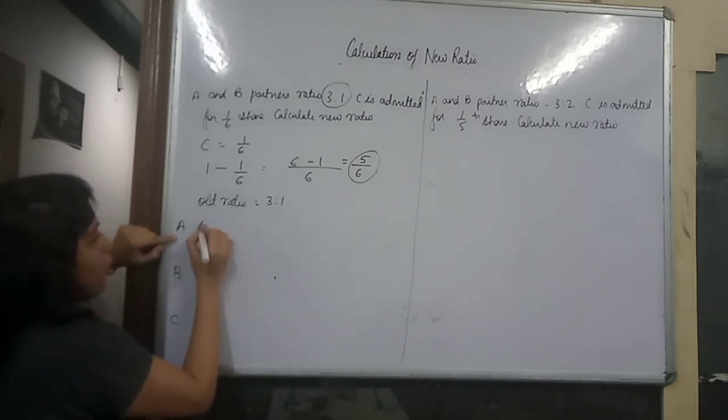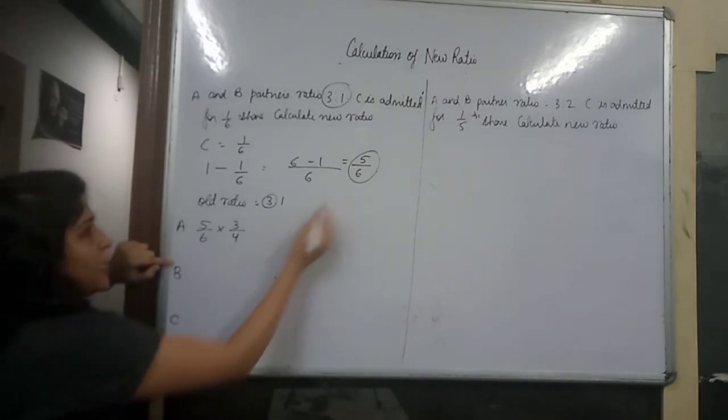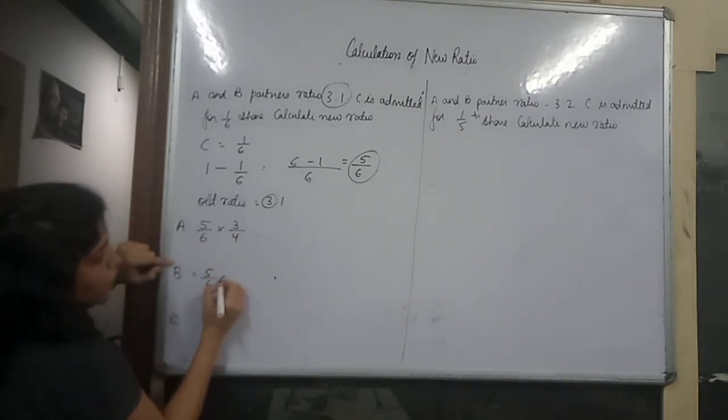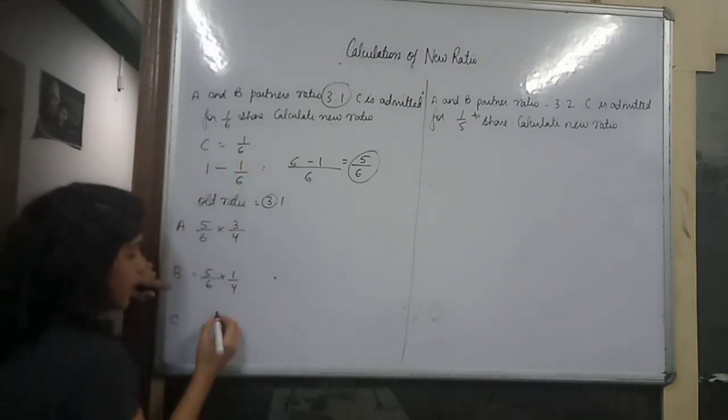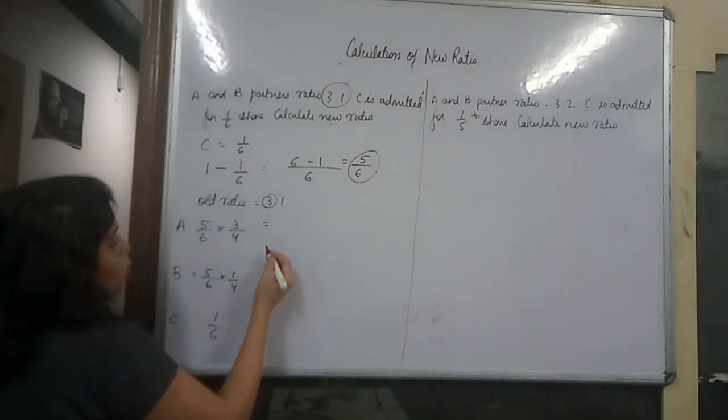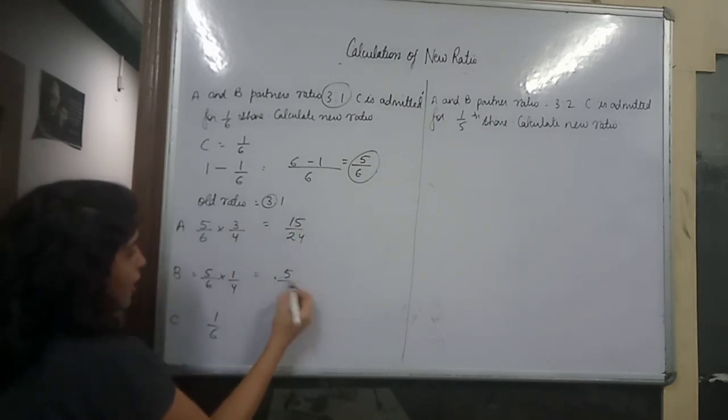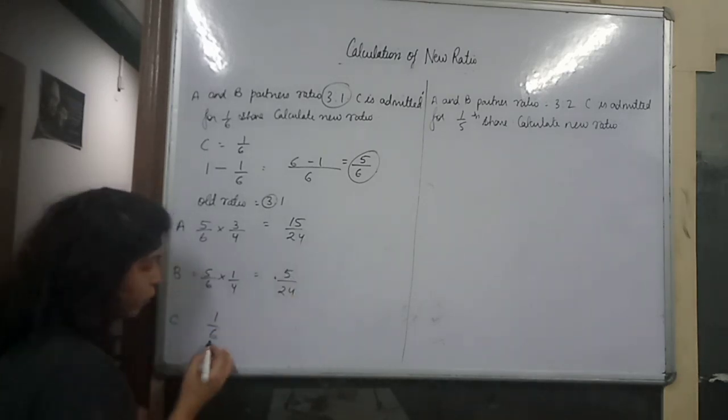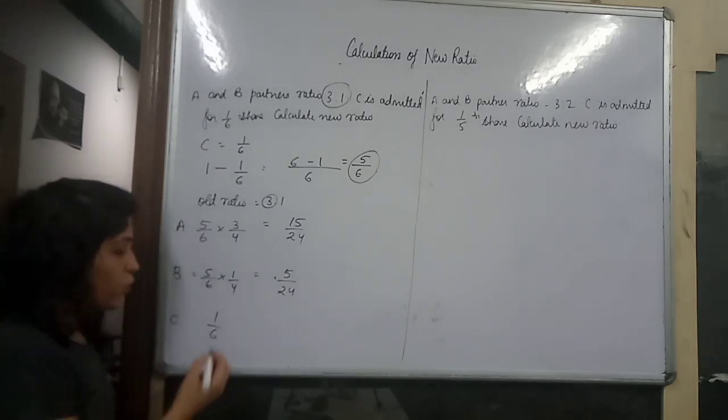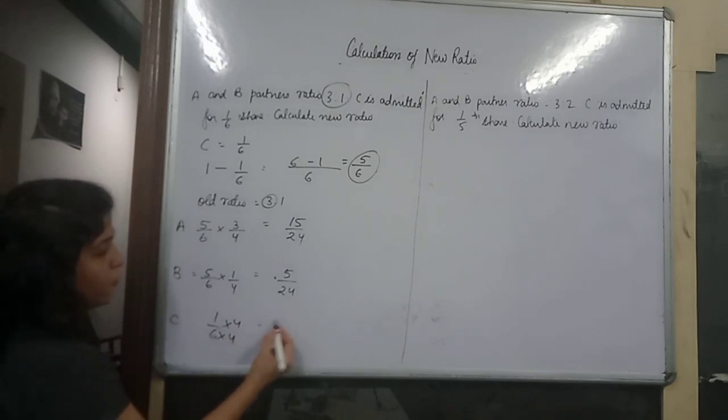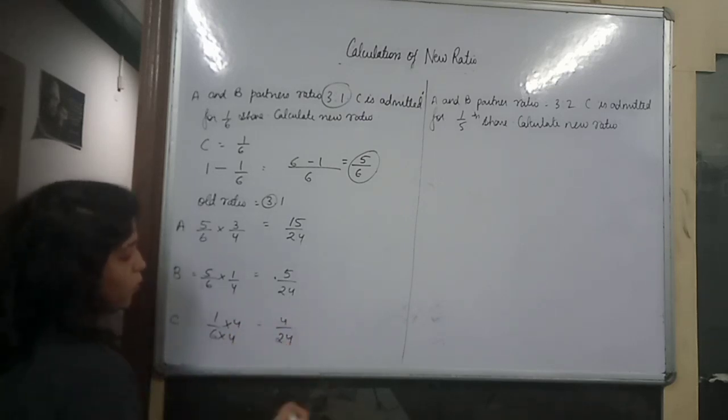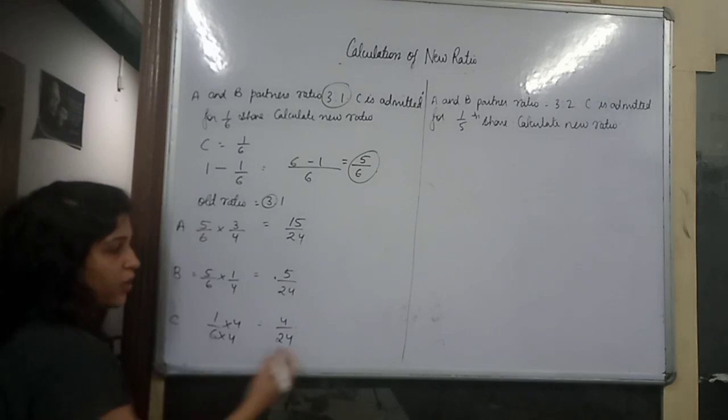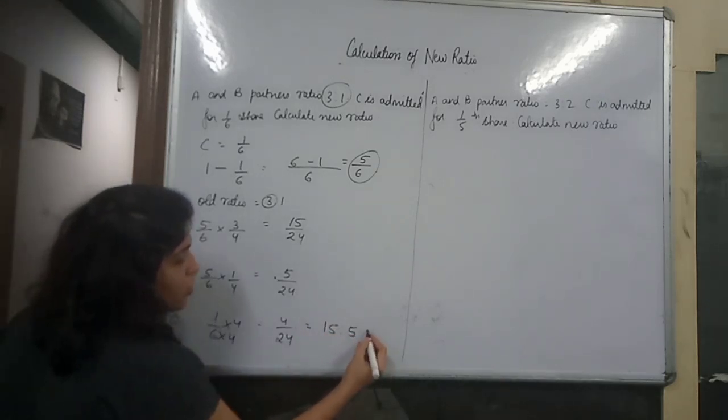2 by the resolution into 1 by 4 and c 1 by 6, so 15 by 24, 5 by 24. Now here the denominator is the same, 24 here, 24 here, 24. 6 to 24, 4 by 24, 4 by 24, multiply and multiply. Now ratio 15 is to 5 is to 4.